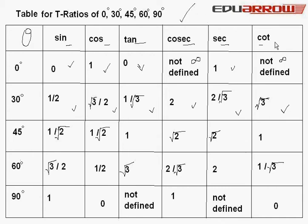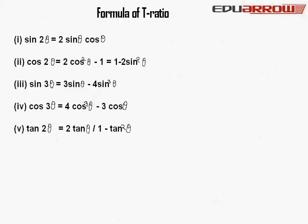Now the formulas of trigonometric ratios. Sin 2 theta is equal to 2 sin theta into cos theta. Cos 2 theta is equal to 2 cos squared theta minus 1, which can also be written as 1 minus 2 sin squared theta.